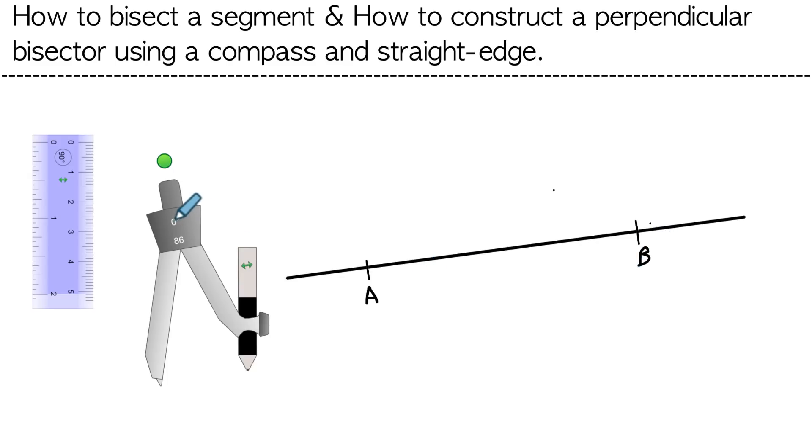Okay, now as we make a perpendicular bisector we will also happen to find the very exact middle of the segment AB. All right, let's get started.